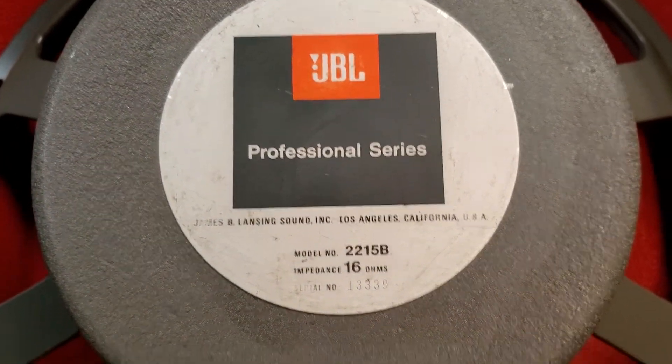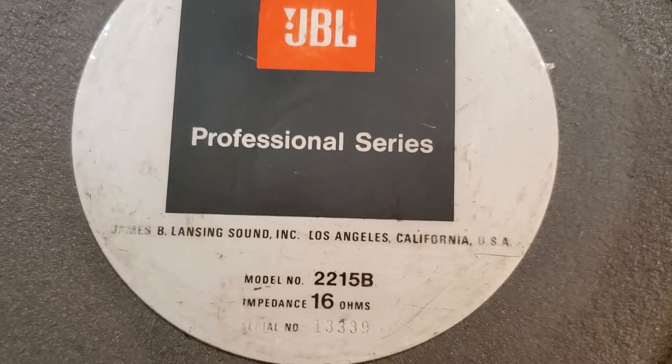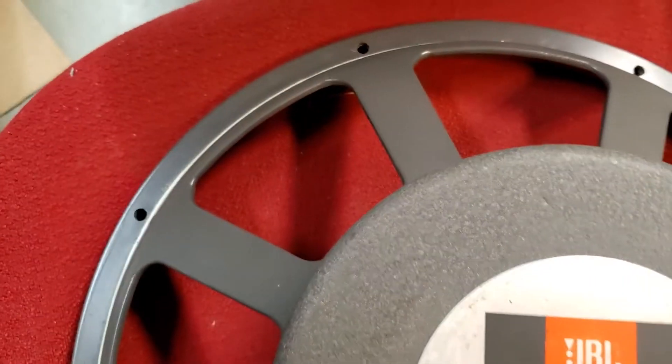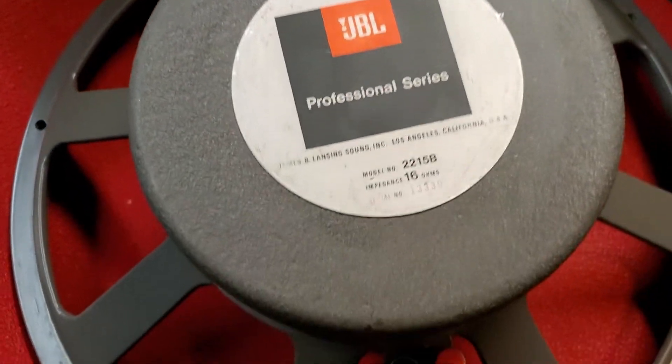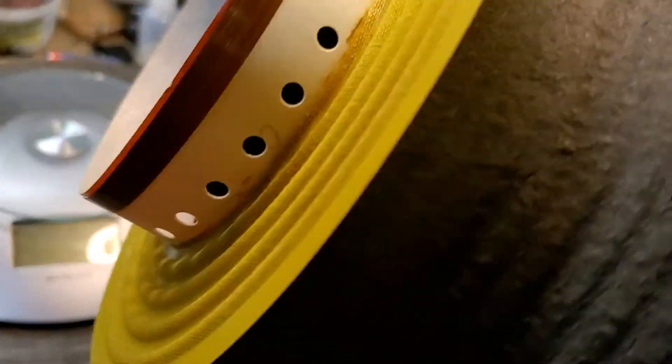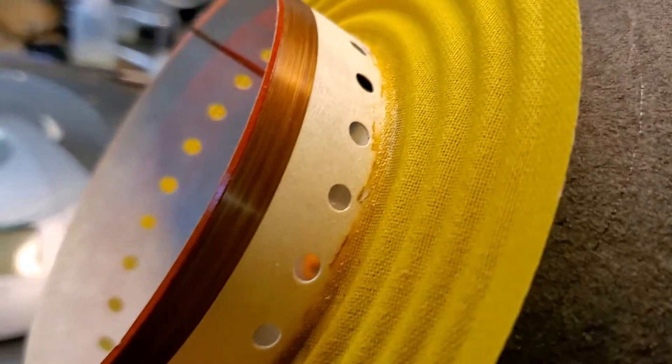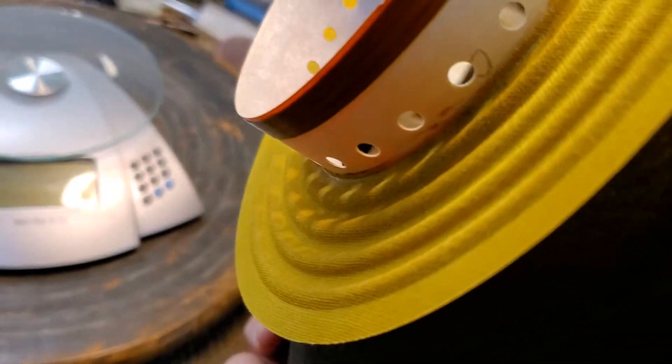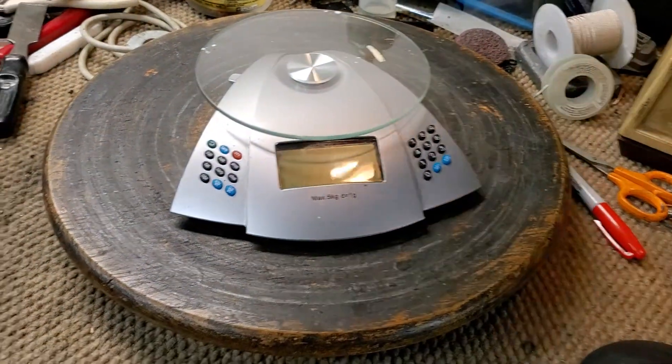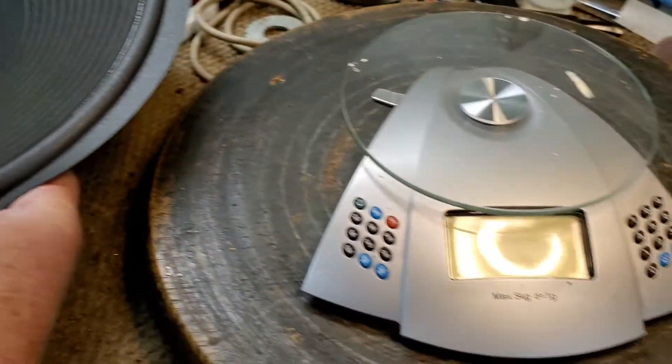Well hello again, this big fella right here, a 2215B, is getting the resuspension treatment. I've installed a new surround and a new spider, and the moving mass for the 2215 is supposed to be 97 grams.